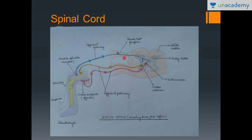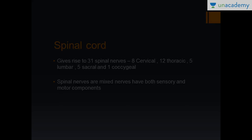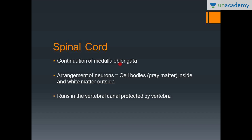Looking at the spinal cord cross-section, you can see the dorsal horn, the ventral horn, the central gray matter, and the surrounding white matter. The dorsal horn carries afferent nerves — sensory nerves that bring information from the periphery to the center. The ventral horn carries efferent nerves — nerves that carry information from the central nervous system to the periphery. The nerve fibers of the dorsal and ventral horn combine to form a spinal nerve, which contains both sensory and motor components, making it a mixed nerve.